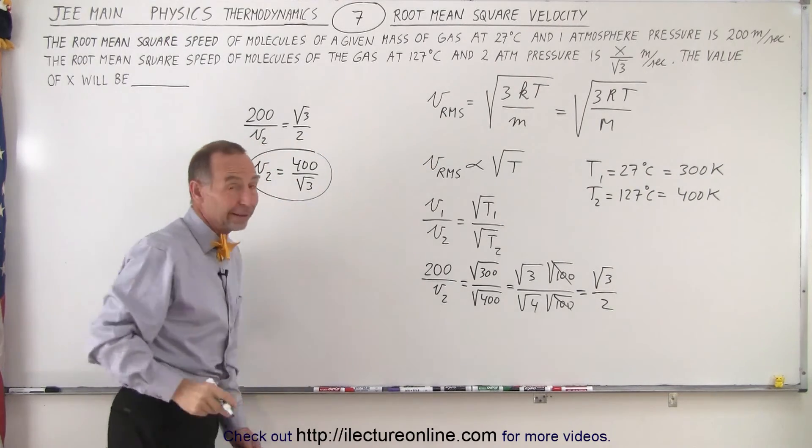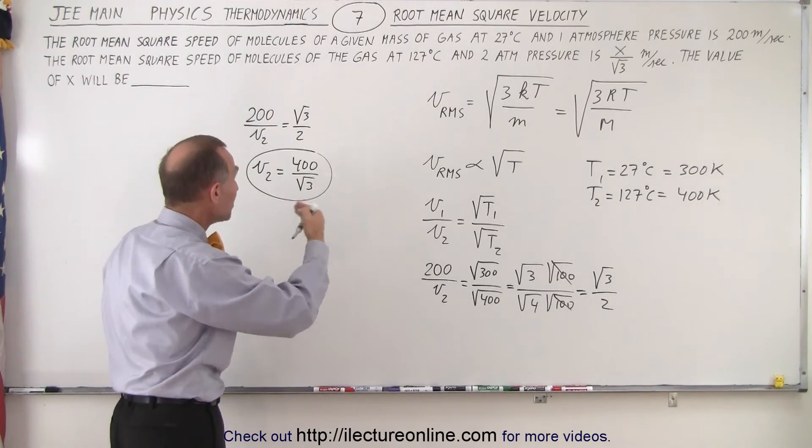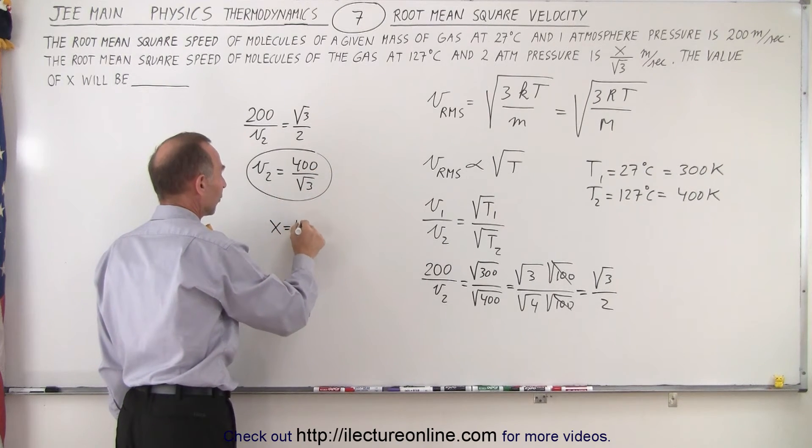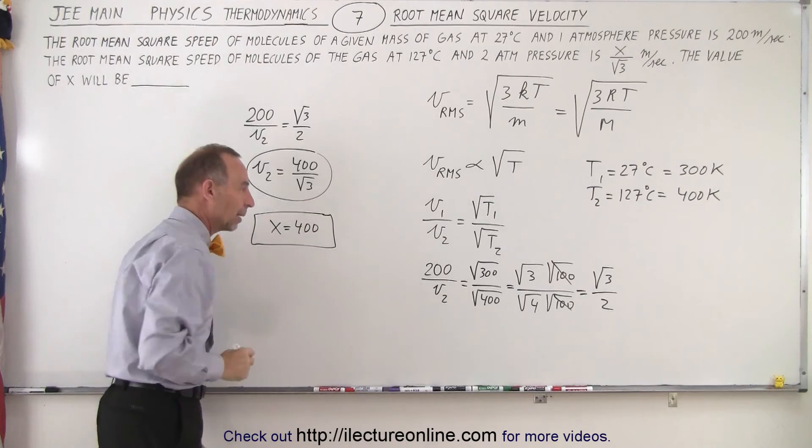Now we look at the answer format, and we see that it's x over the square root of 3 meters per second, so therefore we can see that x must equal 400, and that is then the correct answer for this problem.